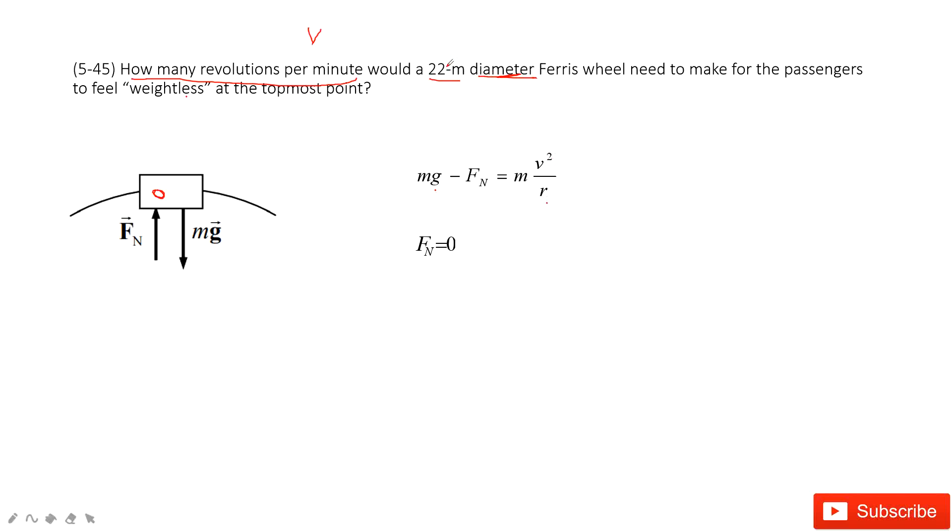In this case, we can get it because g is 9.8 meters per second squared, r is given as 11 meters. The next one, the problem is a little bit difficult. It asks you how many revolutions per minute.